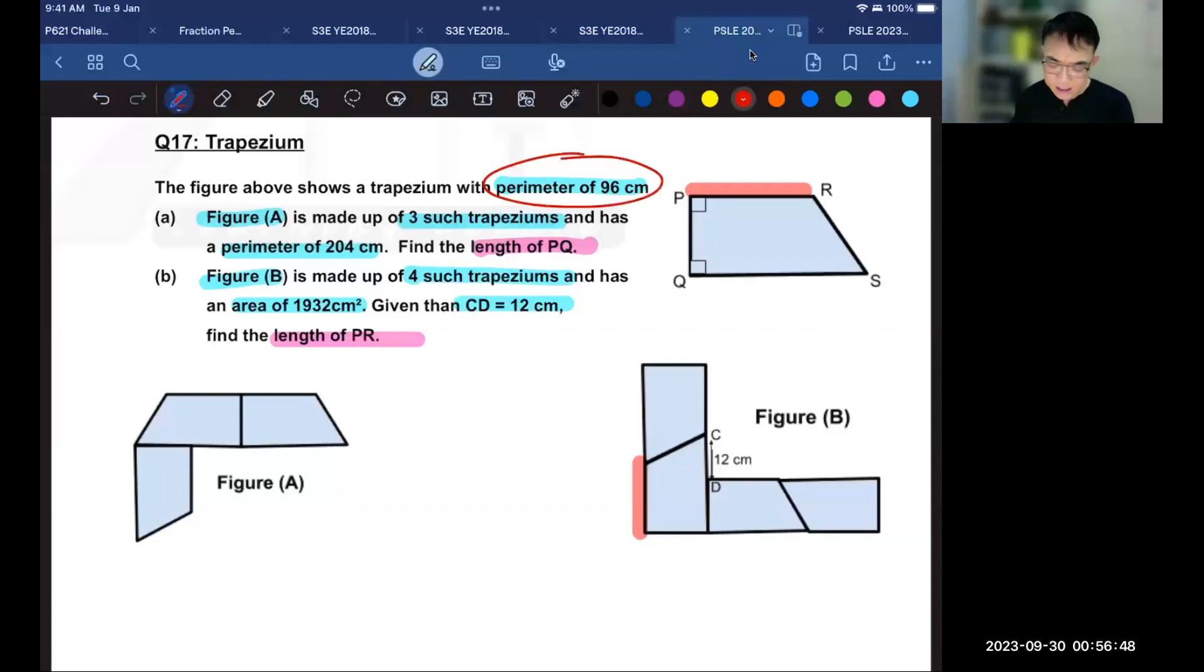Let's begin with the first piece of information, which is that the perimeter is 96 centimeters. Just to make sure you understand, the 96 centimeters that we are talking about is over here. This plus this plus this plus this. So together, that makes 96 centimeters. It is also given that figure A has a perimeter of 204 centimeters. I'm highlighting the lines that add up to 204.